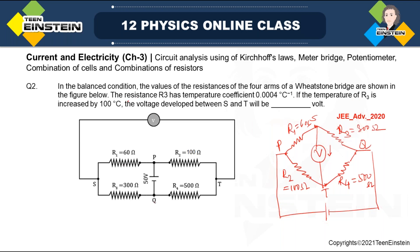The resistance R3 has a temperature coefficient alpha. If the temperature of R3 is raised to 100 degrees centigrade, we need to find the voltage developed between S and T. At the balance condition, these are the standard resistors. But if we increase the temperature of R3, its resistance will increase, and in that case there will be current passing through this arm also. When the temperature of R3 alone changes without changing others, the balance condition will be disturbed.